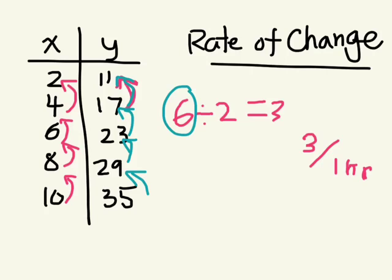And your x variable was changing by 2. And your rate of change is relative to one another. So 6 divided by 2 is 3. Good. So this would be a rate of change of 3.